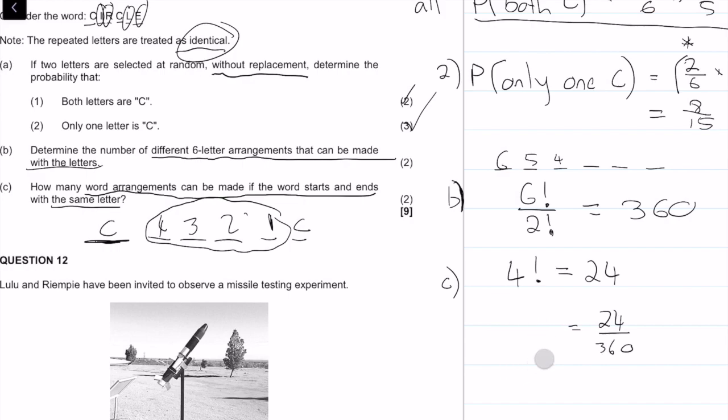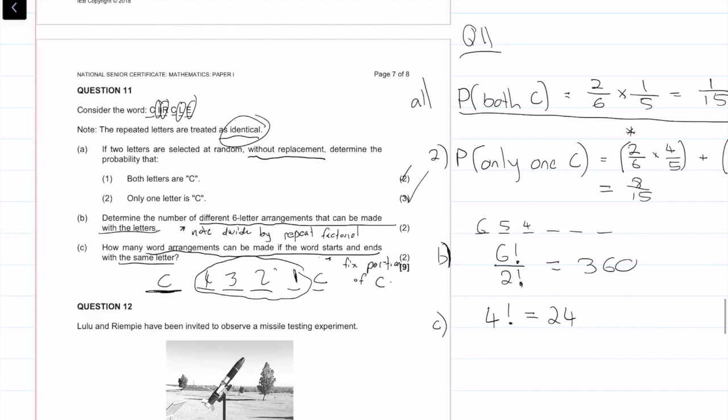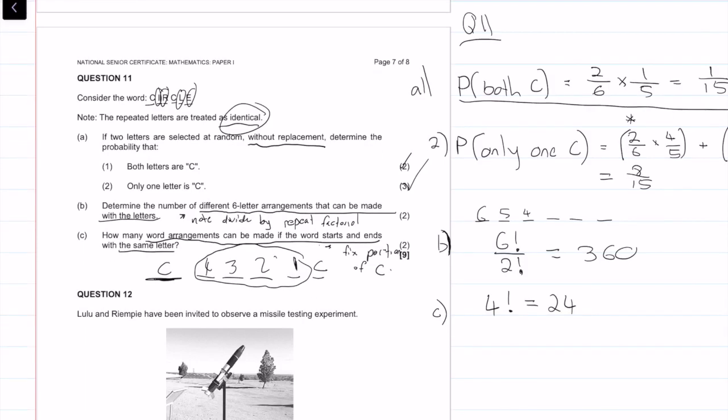But yeah, quite a simple question, once you understand the mechanics behind it. So for this question, you just needed to note, divide by repeats, repeat factorial. And for this one, we just needed to fix position of the C's. Yeah, that's all that there is to this question, quite a short question. So I hope you guys found this useful, and thanks for watching.